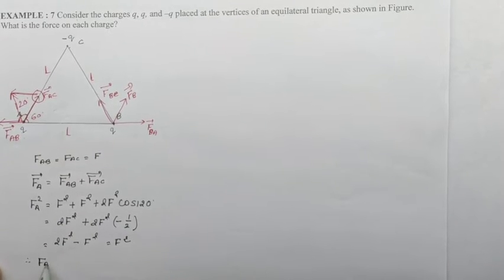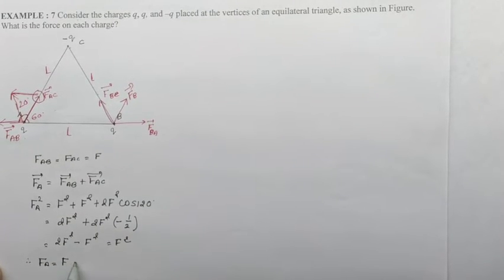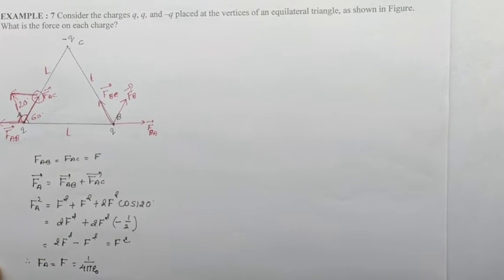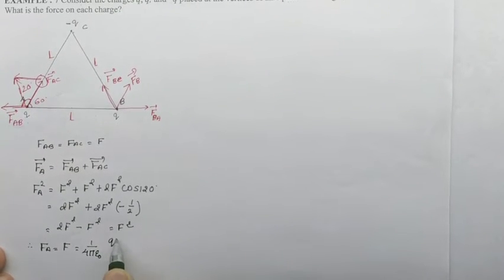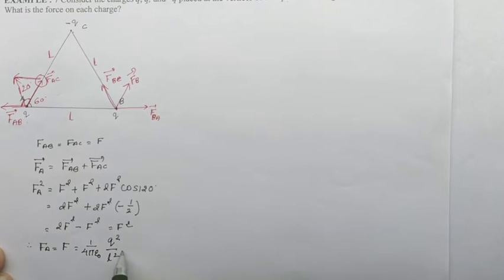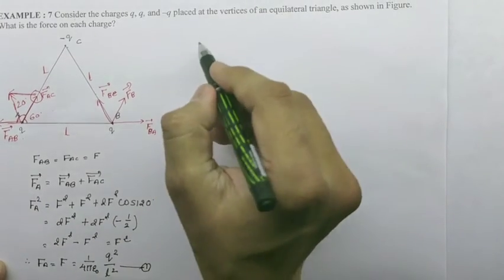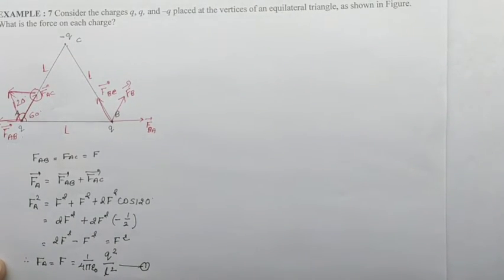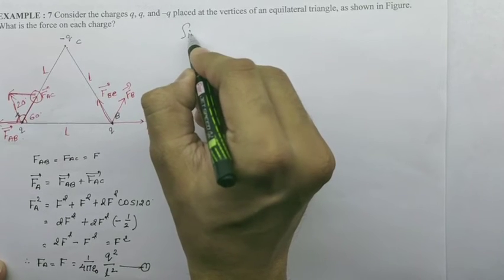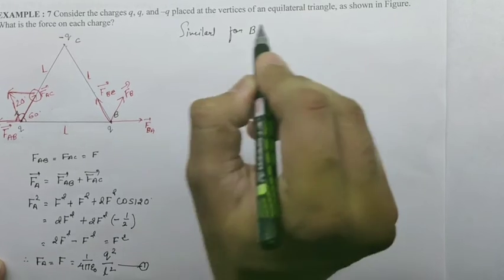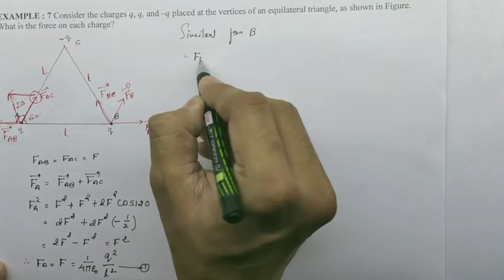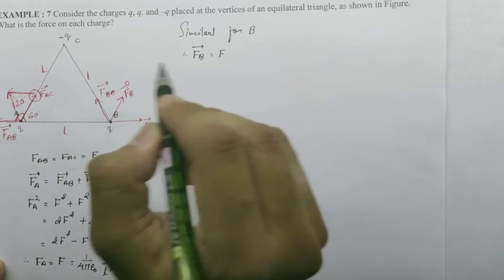Therefore FA equals F, and F equals 1 over 4πε₀ times Q² over L². Number 1. For B you have to do the same. There is no different system for B. Similarly for B, therefore FB equals F.